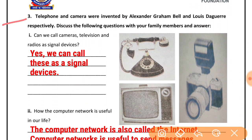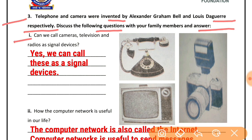Next question: telephone and camera were invented by Alexander Graham Bell and Louis Daguerre respectively. Telephone aur camera ka invention Alexander Graham Bell aur Louis Daguerre ke dwara kiya gaya. Discuss the following questions with your family members and answer. Kuch questions hain — unhe apne family members ke saath discuss kariye aur unke answers dijiye.